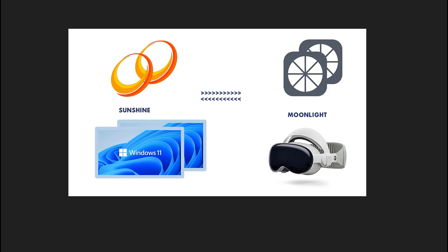In this video, I'm going to show how to get dual monitors inside of Apple Vision Pro. I'm going to talk about how to get two Windows monitors that you can simultaneously use and mouse between them. We're going to need two instances of Sunshine installed on our computer that will allow for both screens. Then we're going to need two instances of Moonlight installed on the Apple Vision Pro — one Moonlight talking to one Sunshine, the other Moonlight talking to the other Sunshine.